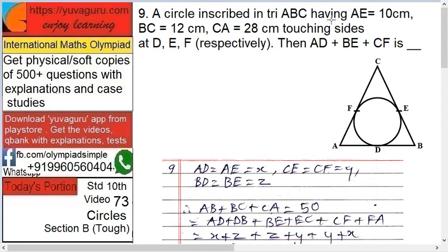A circle inscribed in triangle ABC having AB equals to 10 centimeters, BC equals to 12 centimeters, and CA equals to 28 centimeters, touching sides at D, E, and F respectively.